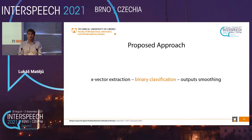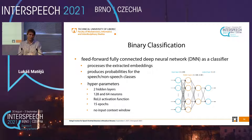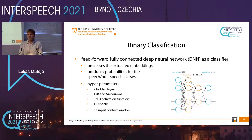The second step is binary classification. We use a simple shallow feed-forward fully connected deep neural network. It takes the extracted X-Vectors and produces probabilities for speech and non-speech classes for each frame. It has only two hidden layers, and we are not providing it with any additional input context because the context should already be in the X-Vectors.